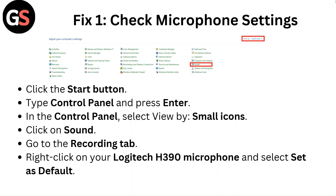Fix one: check microphone settings. Click the start button, type control panel and press enter. In the control panel, select view by small icons, click on sound, go to the recording tab, right click on your Logitech H390 microphone and select set as default.